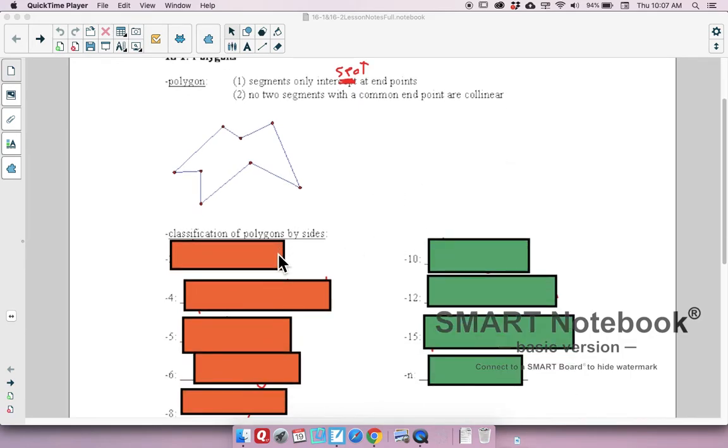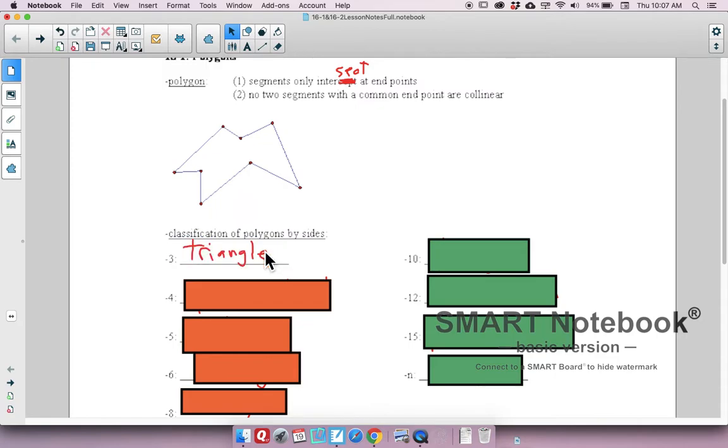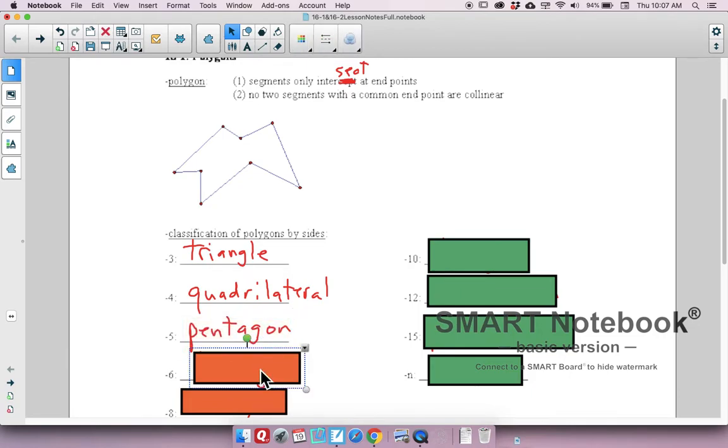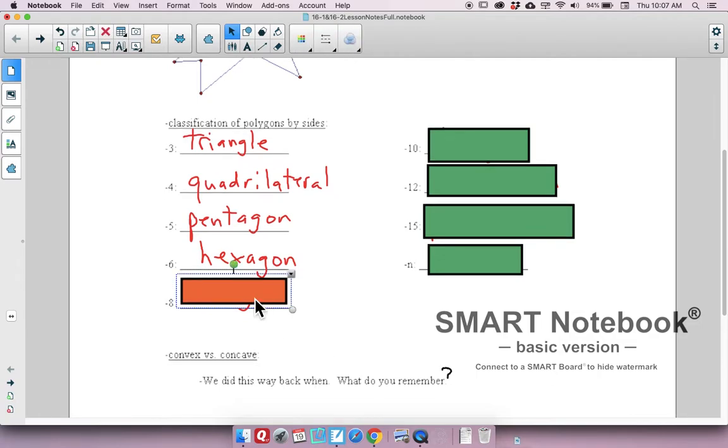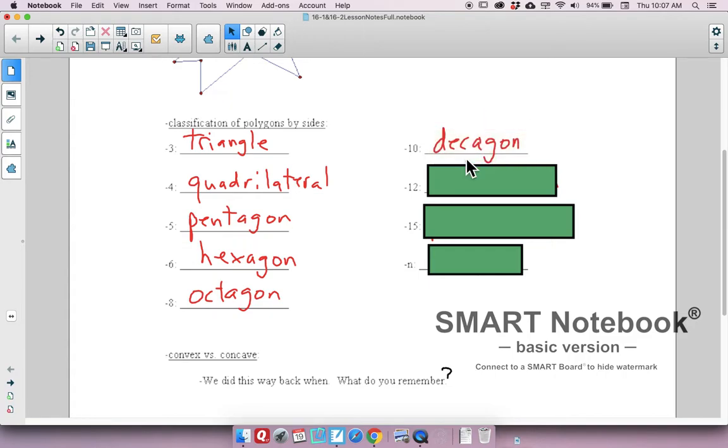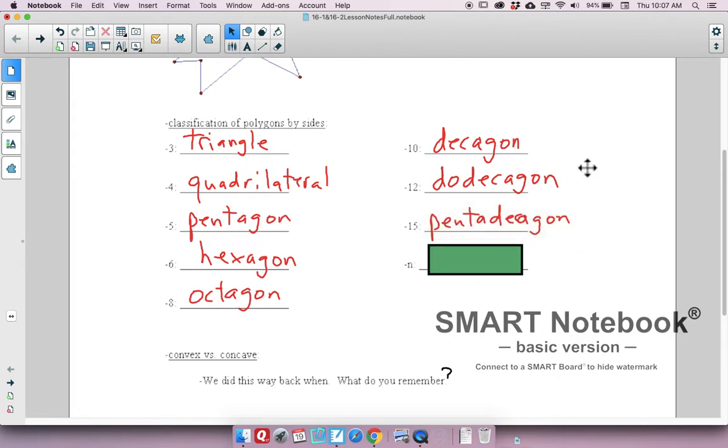You're very familiar with classification of polynomials by sides. What is a three-sided polynomial called? Yes, it's a triangle. Four-sided: quadrilateral. Five-sided: pentagon, like that thing in Washington, D.C. Six sides: hexagon. Eight sides, stop sign, it's an octagon. Ten sides is a decagon. Twelve sides, a dodecagon. Fifteen sides, think about what, look at five, look at ten. What do you think it's going to be? Yes, it's a pentadecagon. And if we have n number of sides, meaning we don't know the number, we call it an n-gon.